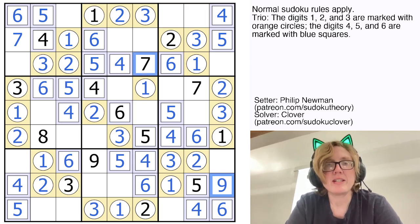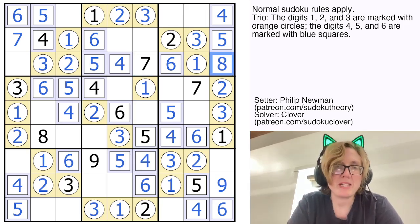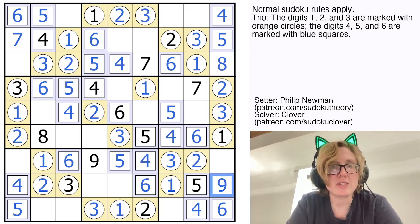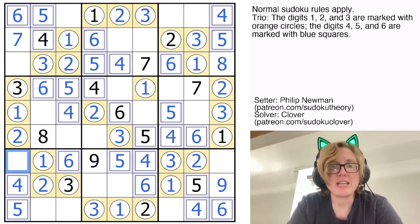Now these two digits, 7 and 9 both see this cell, so that's going to be an 8. And these two digits, 7 and 9, both see this cell, so that will also be an 8.